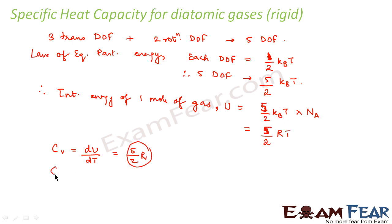Now if Cv is equal to 5 by 2 R what is Cp? As I told, Cp minus Cv is equal to R. So Cp is Cv plus R. So that will be 7 by 2 R.